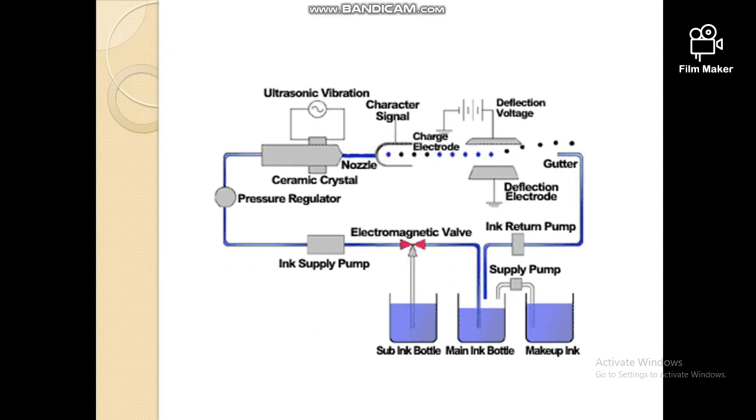When the print head moves over regions of the paper which are not to be inked, the charging electrode is left on and gives the ink droplets a net charge. These charged droplets move forward and pass through the deflecting plates.